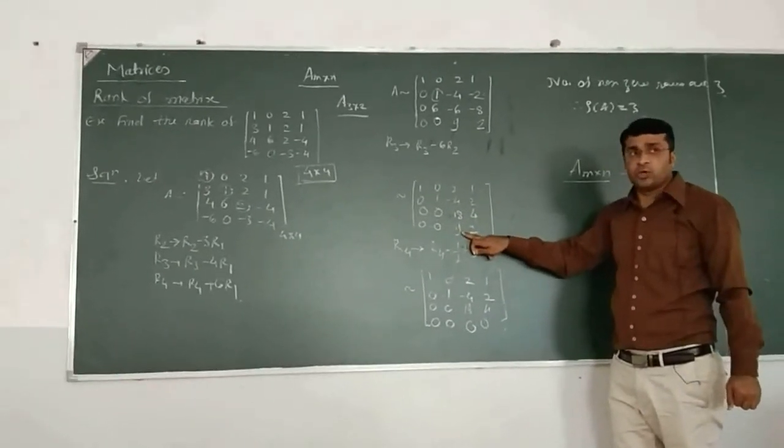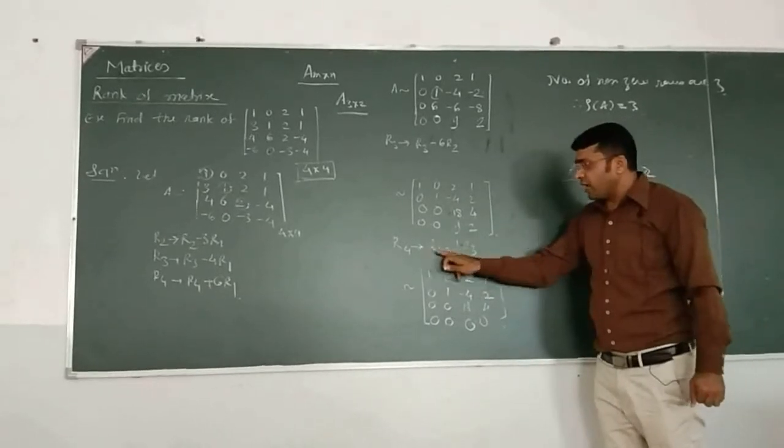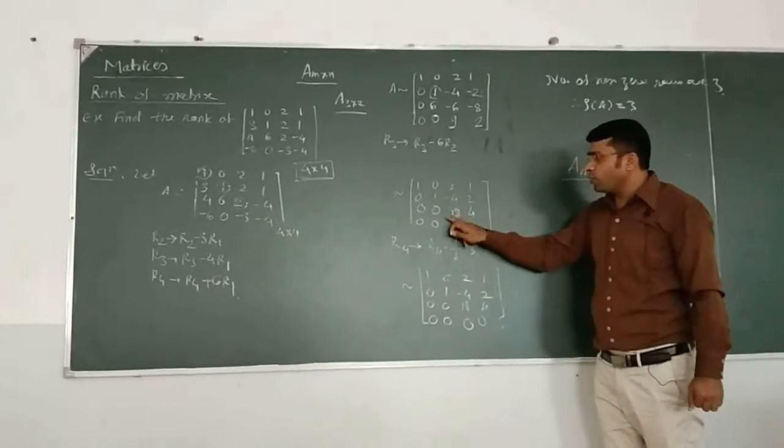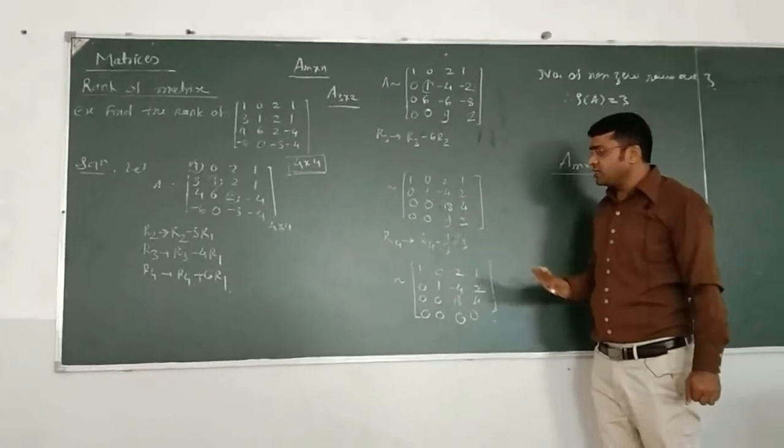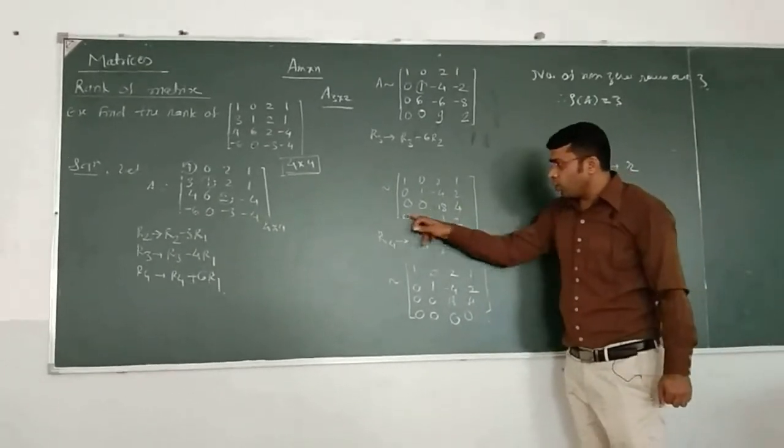What we do here? 9 minus 9 will be 0. So we apply the operation R4 minus 1 by 2, R3. The 1 by 2, that is 9 here. 9 minus 9 is 0.